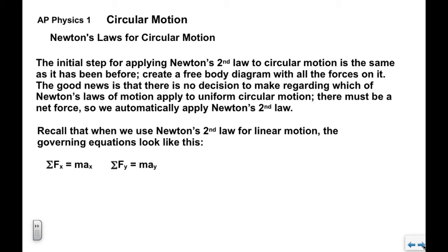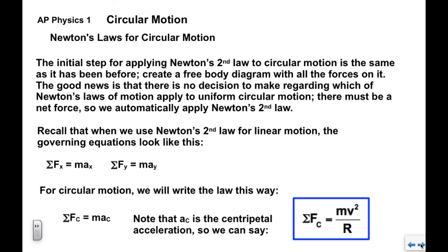We know that when we use Newton's second law for linear motion we looked at sigma fx equals ma x in the x direction, sigma fy equals ma y in the y direction. When we have circular motion we're going to write the law this way: sigma fc equals mac. The subscript c refers to the centripetal direction. We recognize the a sub c as the centripetal acceleration so automatically we can say sigma fc equals mv squared over r. This in the blue box here is the governing equation for Newton's Laws for things that move in circular paths.